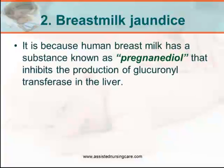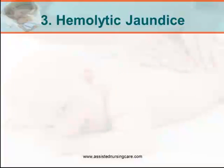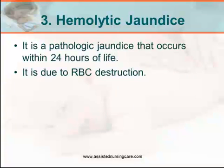Breast milk jaundice occurs because human breast milk has a substance known as pregnandiol that inhibits the production of glucuronyl transferase in the liver, thus increasing the reabsorption of bilirubin through the intestinal tract in a process known as enterohepatic circulation.